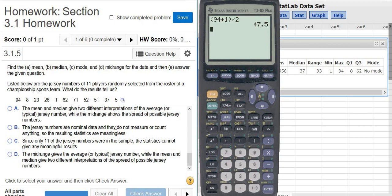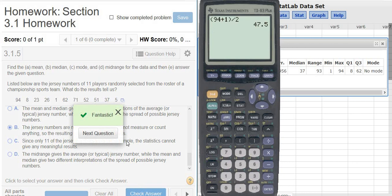So I think this one might be right. The jersey numbers are nominal data, and they do not measure or count anything. Right. So the resulting statistics are meaningless. I'm going to go with that one. So let's try it. And that's it.